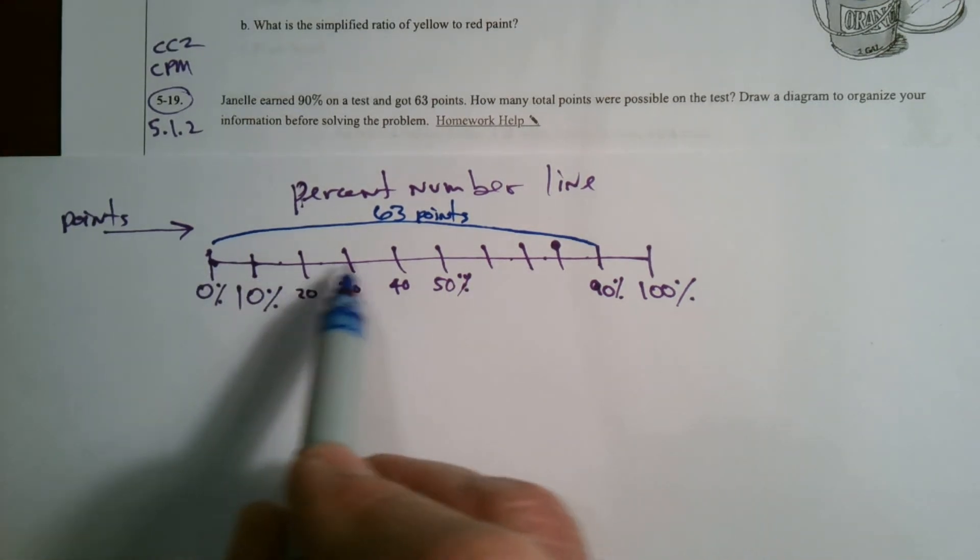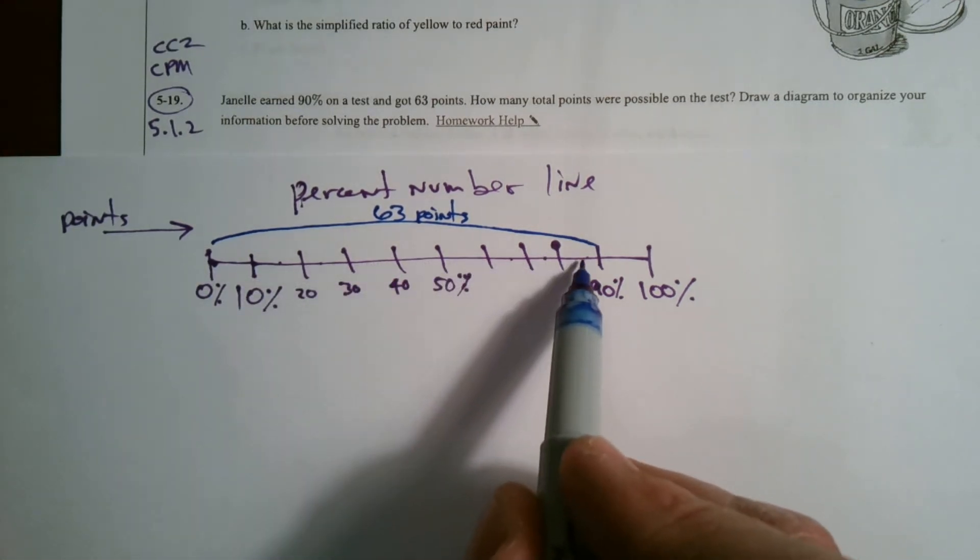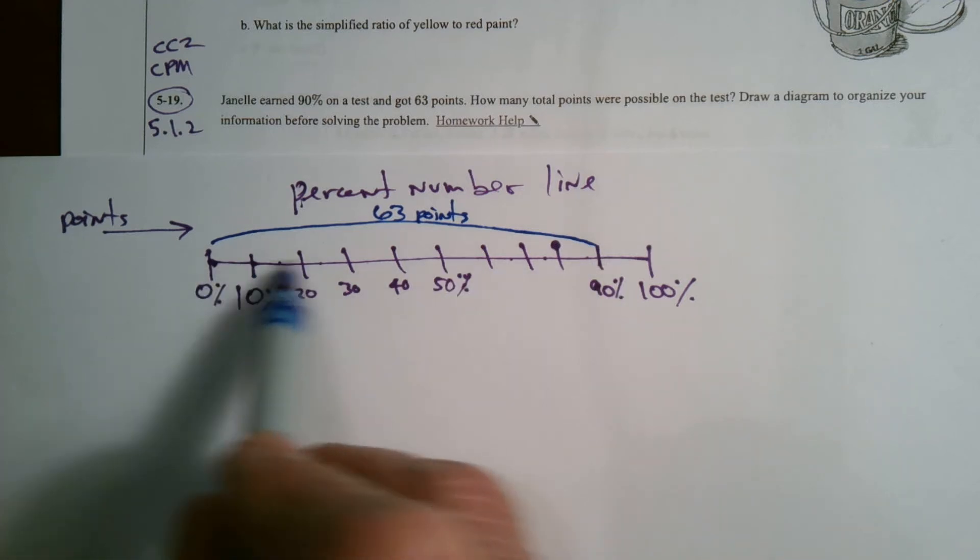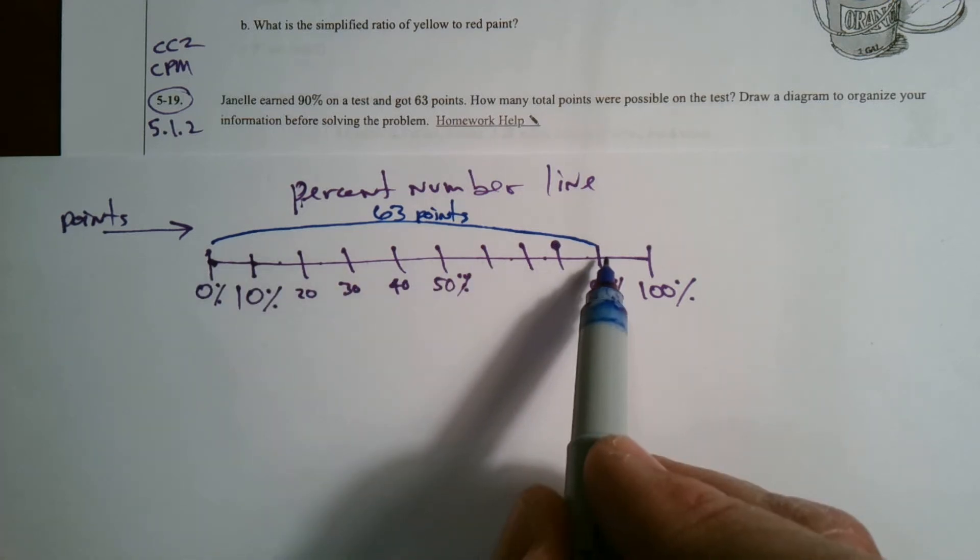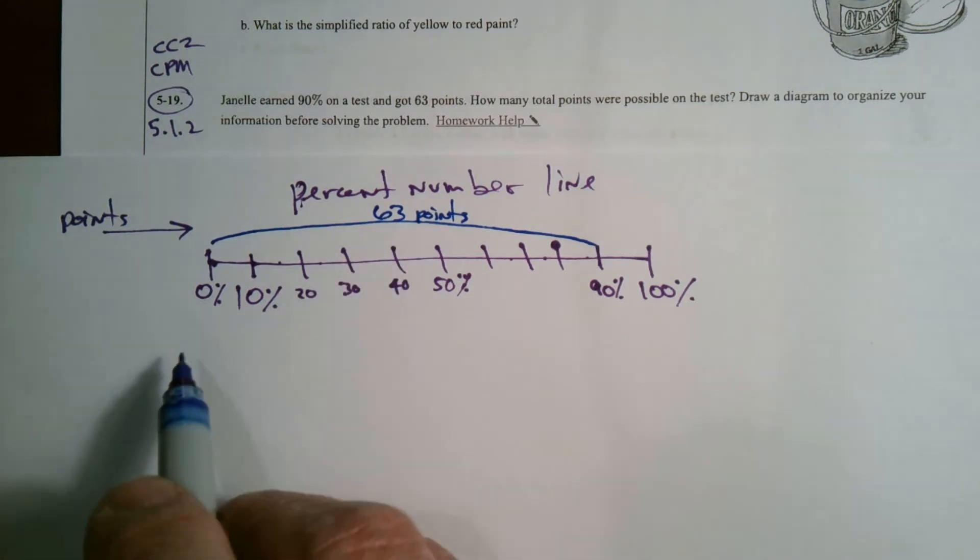There's one, two, three, four, five, six, seven, eight, nine spaces, the scale at nine spaces. So does nine go into 63 evenly?